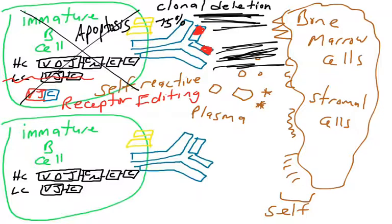The cell on the top, it recognized self. It was self-reactive. It's gone. Can't be saved. Cell on the bottom, its B cell receptor ignores us. It doesn't bind our proteins, doesn't bind our lipids, doesn't bind our sugars. So it would be tolerant. It would be self-tolerant. It gets to leave the bone marrow.